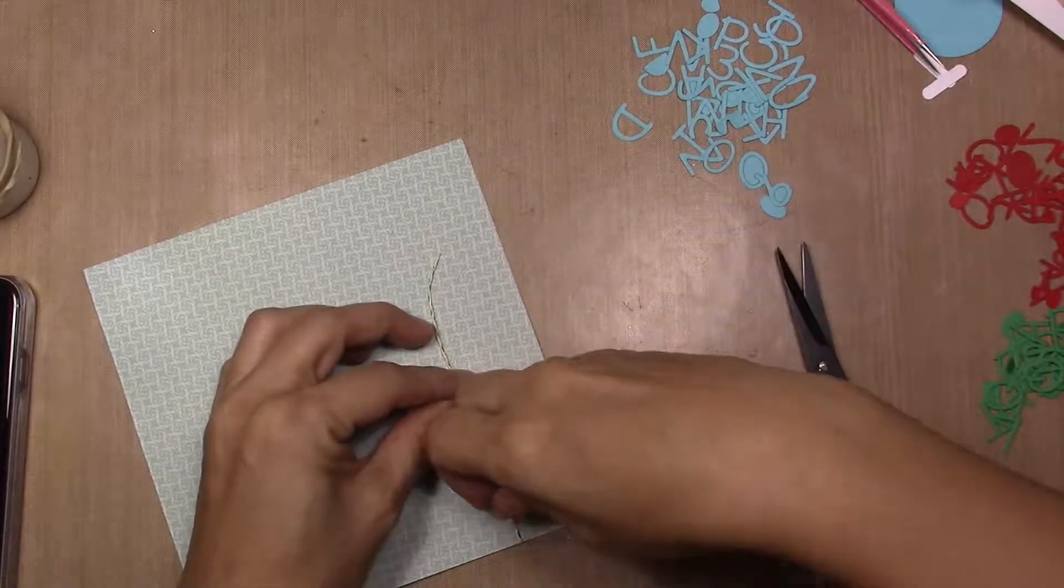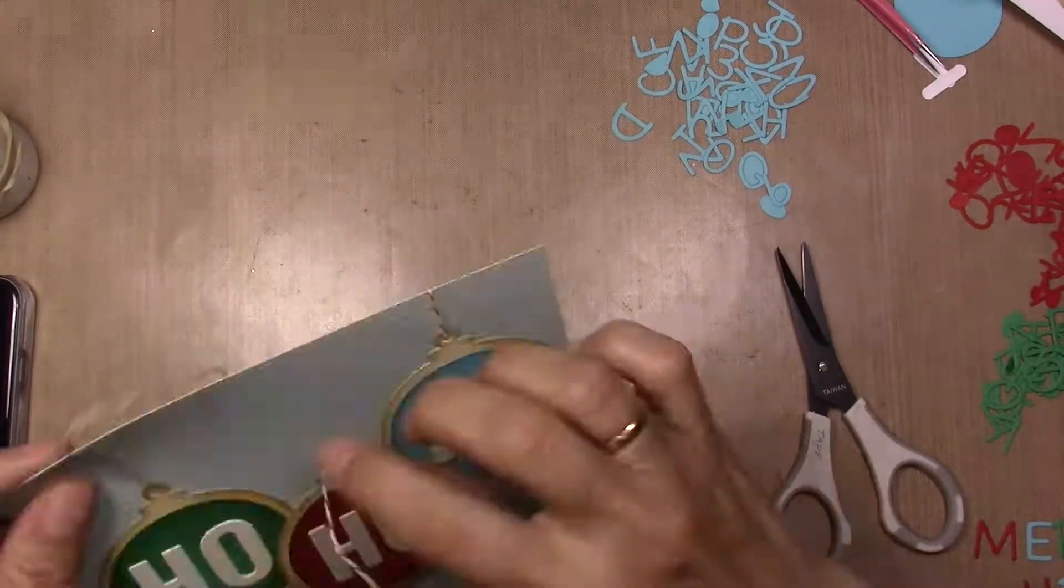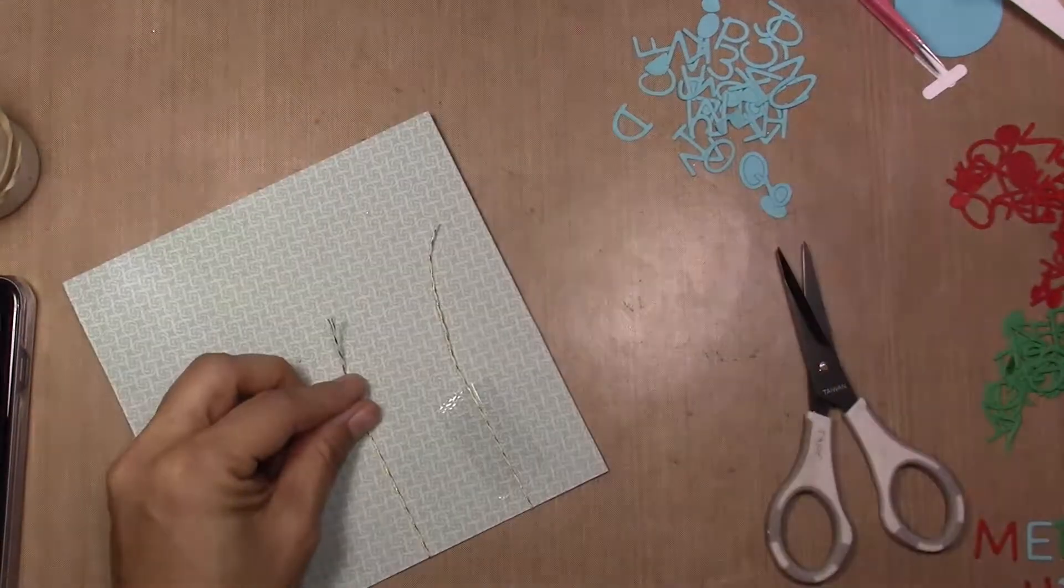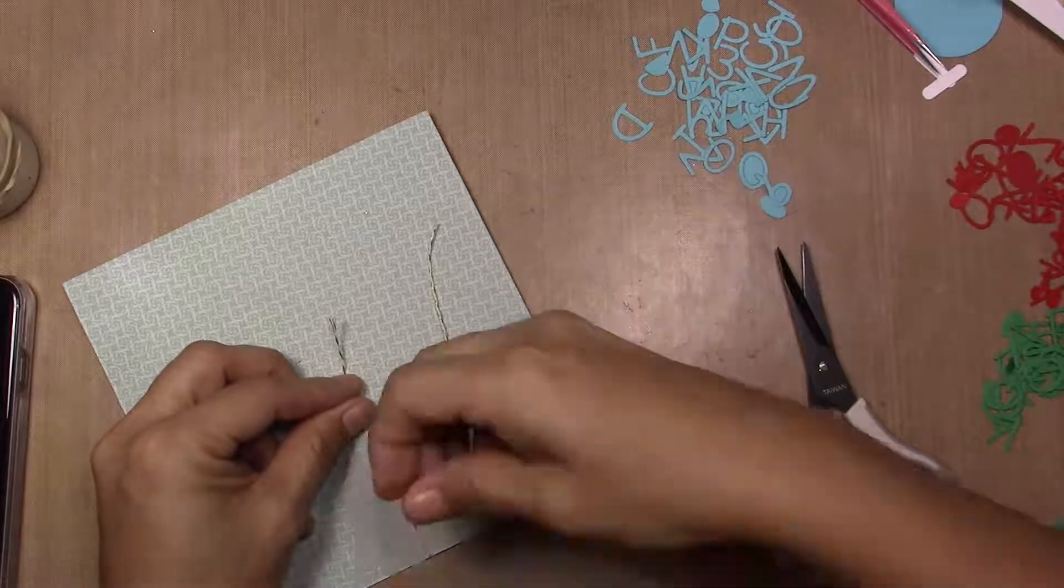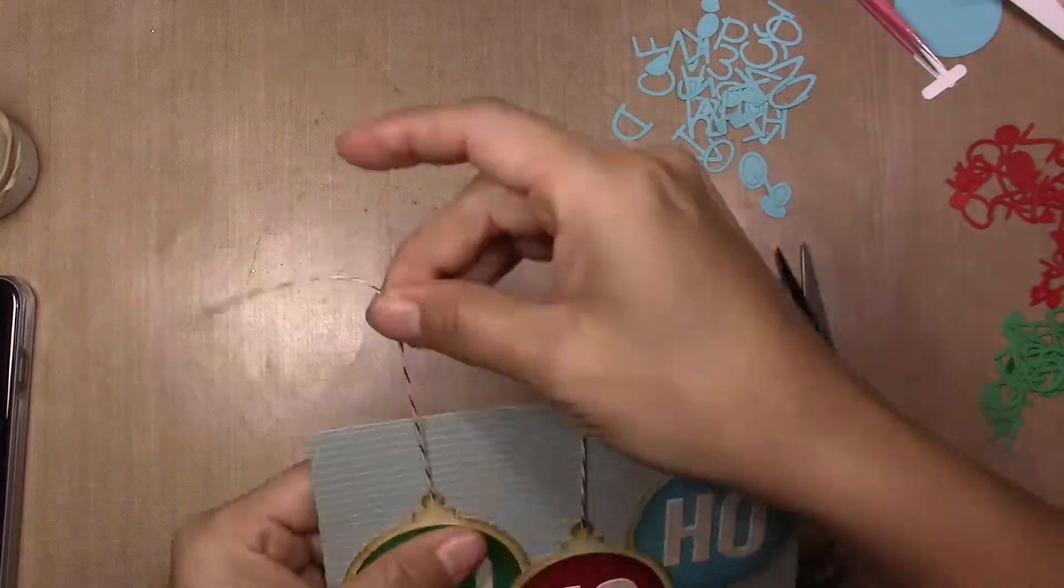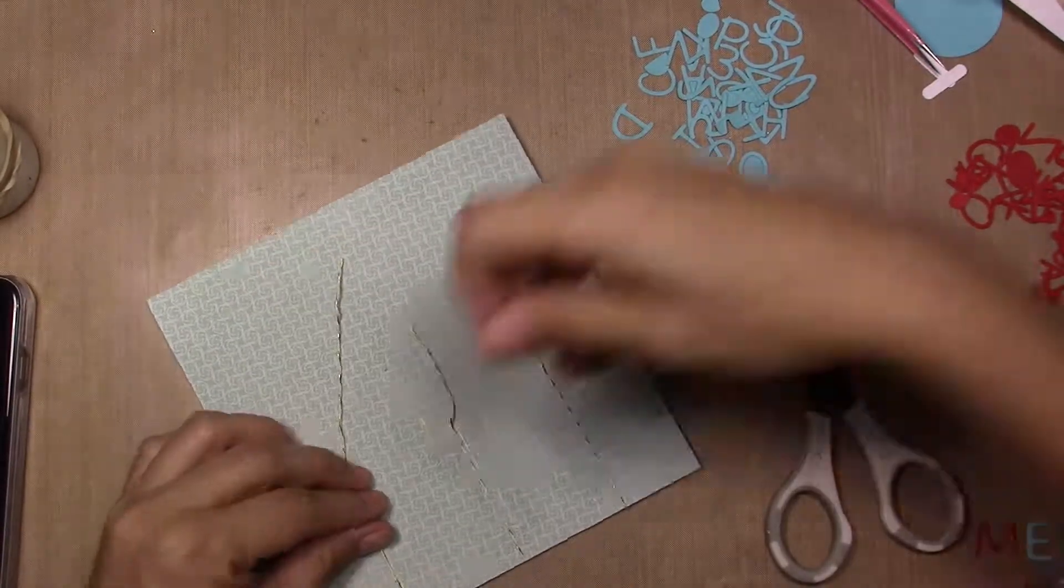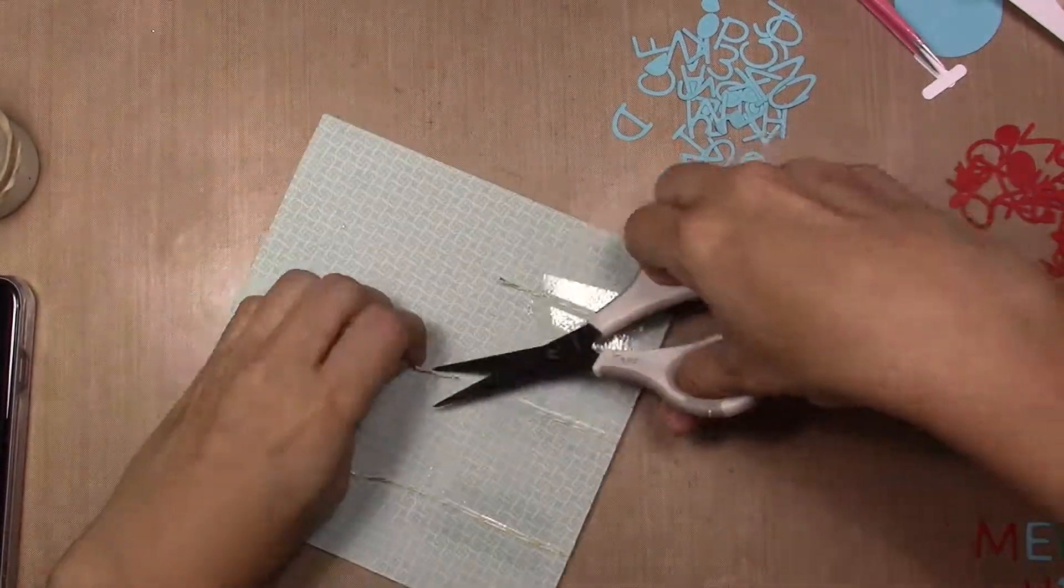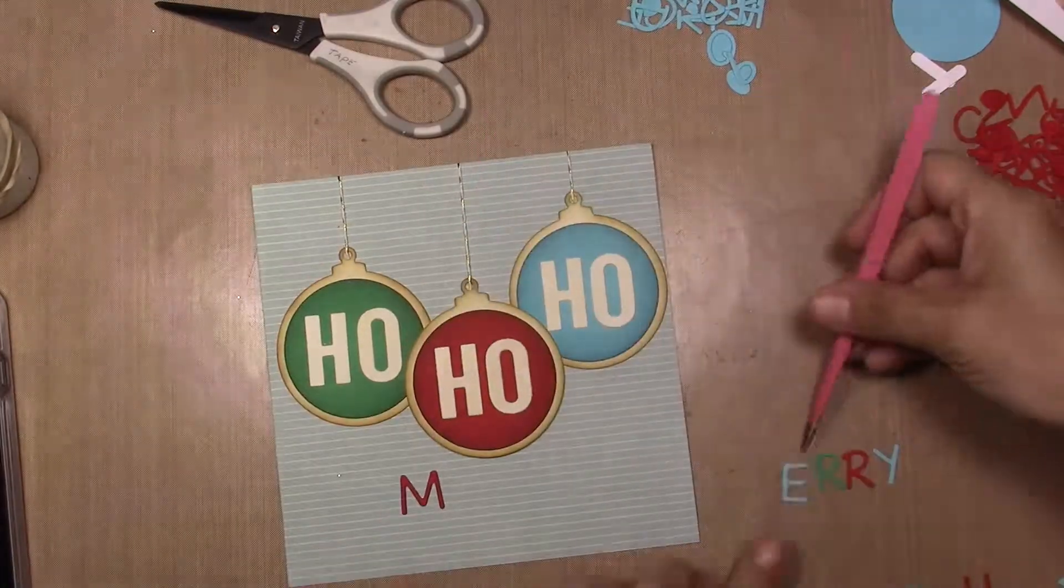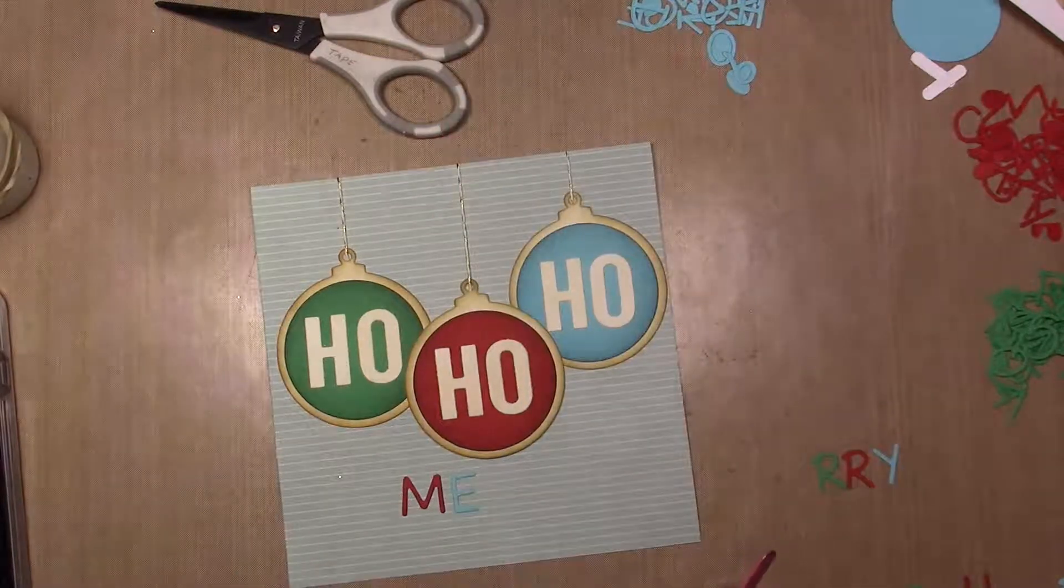After I finish gluing my ornaments I put the baker twine on the back, apply some tape and cut the excess. Then I cut several letters in the same colors as the ornaments - blue, red and green - and I'm going to glue them down saying Merry Christmas.